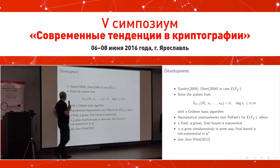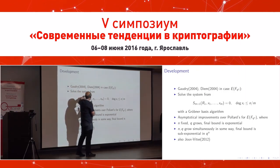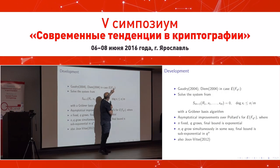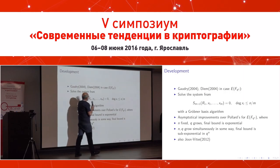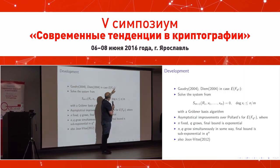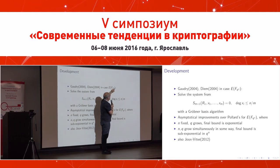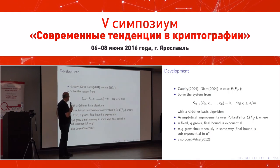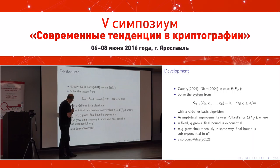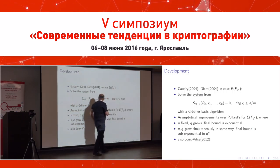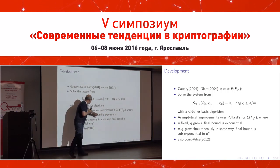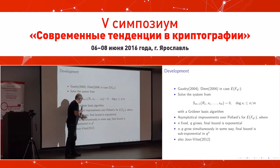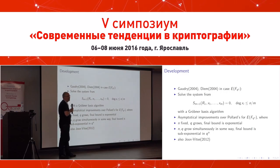After this work was published, Gaudry and Diem applied the idea to the case of fields of size q^n. This is quite different from the standards, where the field size is prime or 2^n with n prime. Nevertheless, it gave very interesting results. Gaudry proved that for fixed n with q growing, the final bound is exponential but much better than Pollard's. In Diem's work, n and q grow simultaneously in a specific way, and the final bound is even sub-exponential.